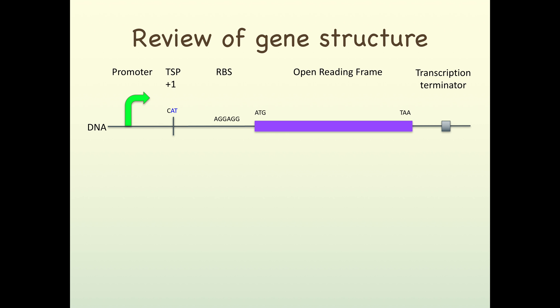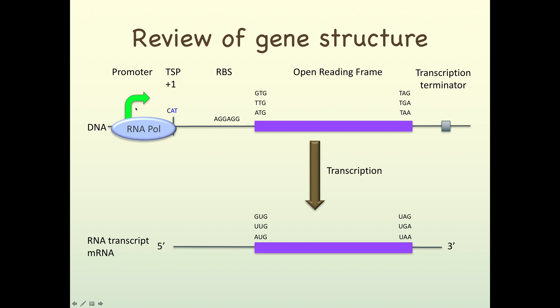What is the enzyme that binds to the promoter? The RNA polymerase binds the promoter and transcribes or synthesizes RNA beginning at the plus one site and ending at the transcription terminator.